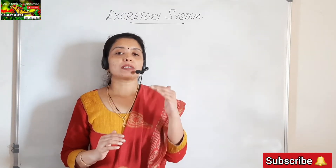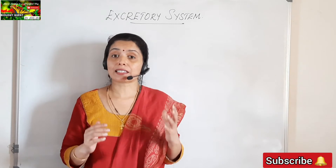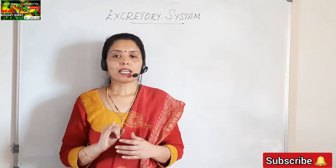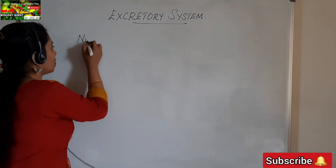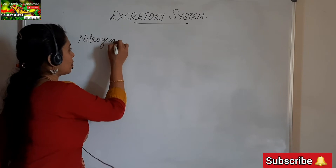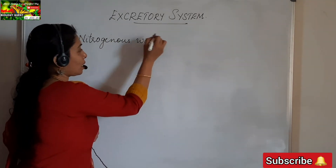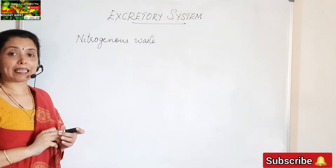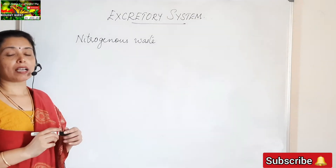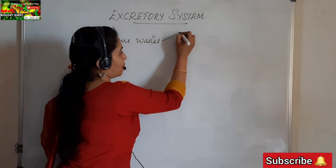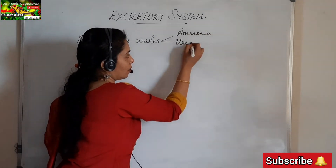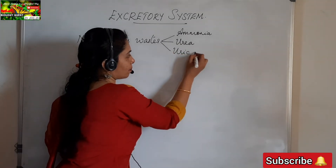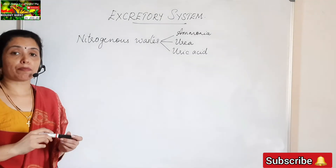Now we should know what substances are to be got rid of from the body — what are the excretory products formed in the body. The first type of excretory product is nitrogenous waste. Nitrogenous waste products are waste containing nitrogen. They are mainly of three types: ammonia, urea, and uric acid.